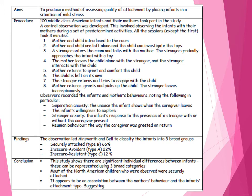This allowed Ainsworth and Bell to classify three broad attachment types: securely attached, which accounted for about 66% of the children, and insecure avoidant, which was about 22% of the children.